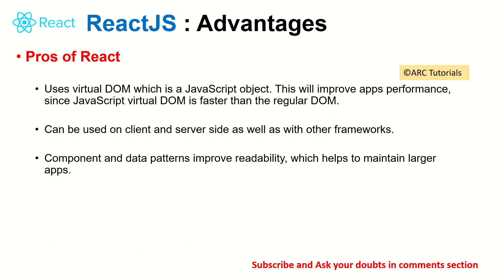Let's talk about some of the advantages, or pros, of React. React uses a virtual DOM, which is nothing but a JavaScript object. This helps increase underlying application performance drastically, since it uses a JavaScript virtual DOM rather than the actual DOM of the browser. React can also be used on the client and server side, as well as with other frameworks. For example, in the MERN stack we use React, Node, and Express together to build an application — React plays well with other frameworks.